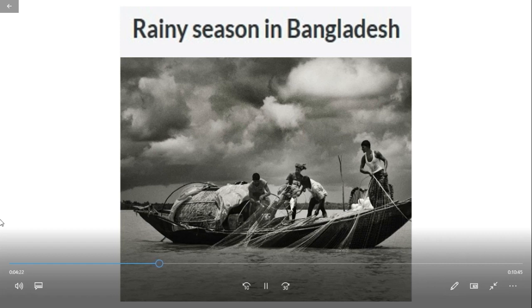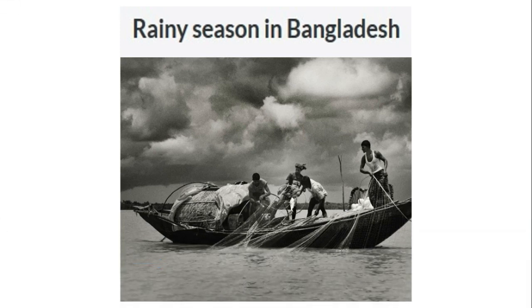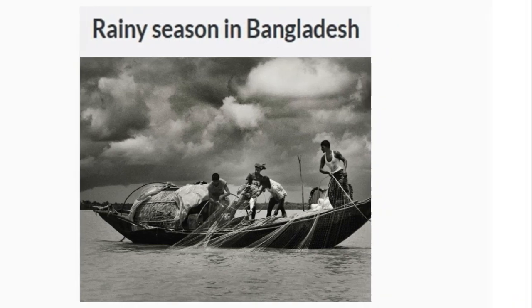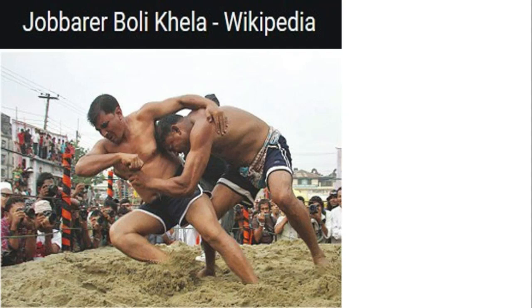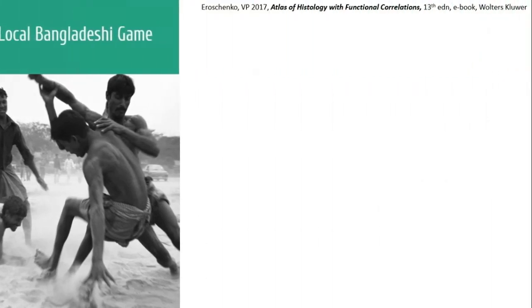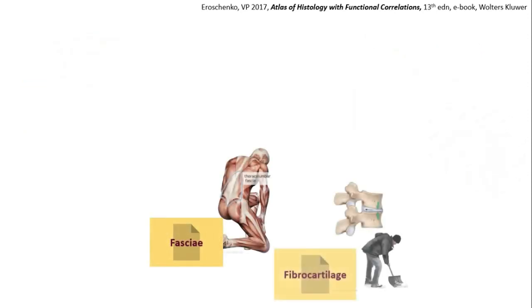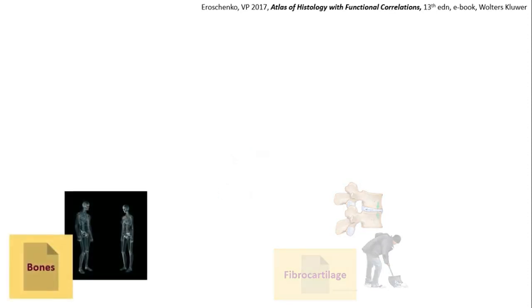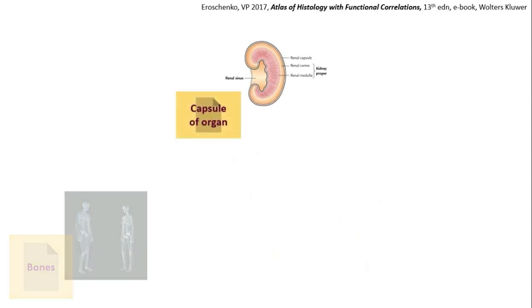This mechanism of dealing with tensile stress is very often seen in our surrounding life — for example, in players of Jabbarer Bully Khala or the popular Bangladeshi game Hadudu. Collagen fiber is present in the dermis of the skin, tendon, ligament, fascia, fibrocartilage, bones, and the capsule of organs.